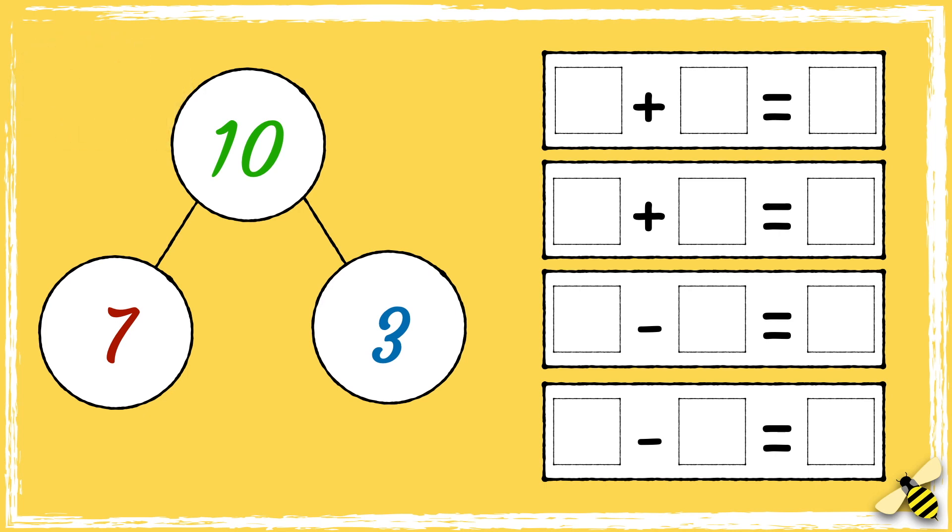Let's see how you got on. Or we could say that 10 take away 3 equals 7, or that 10 take away 7 equals 3.